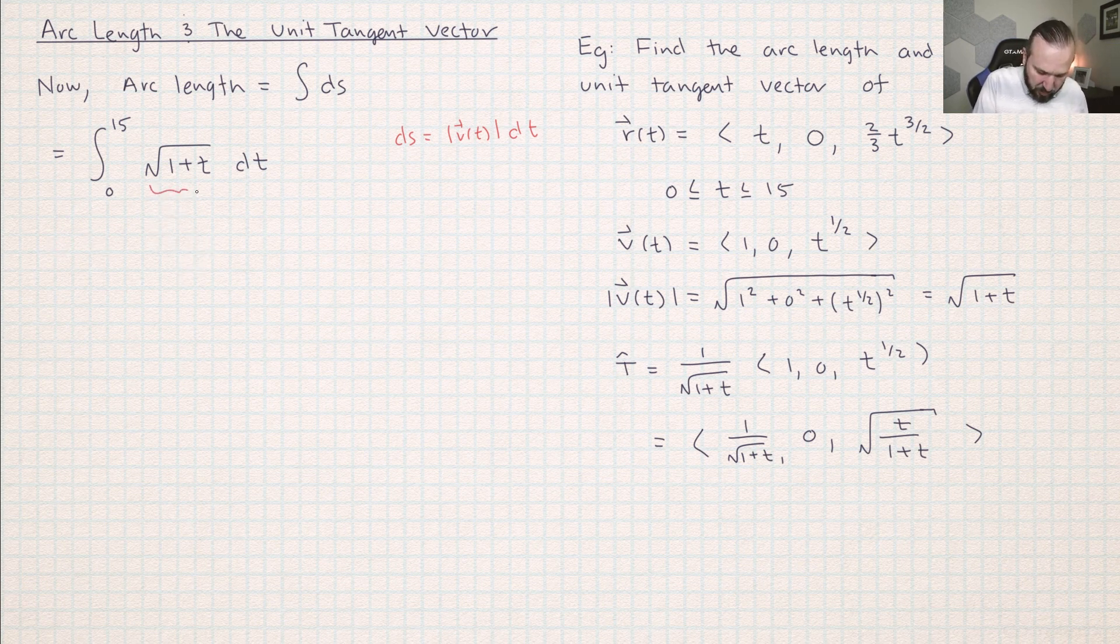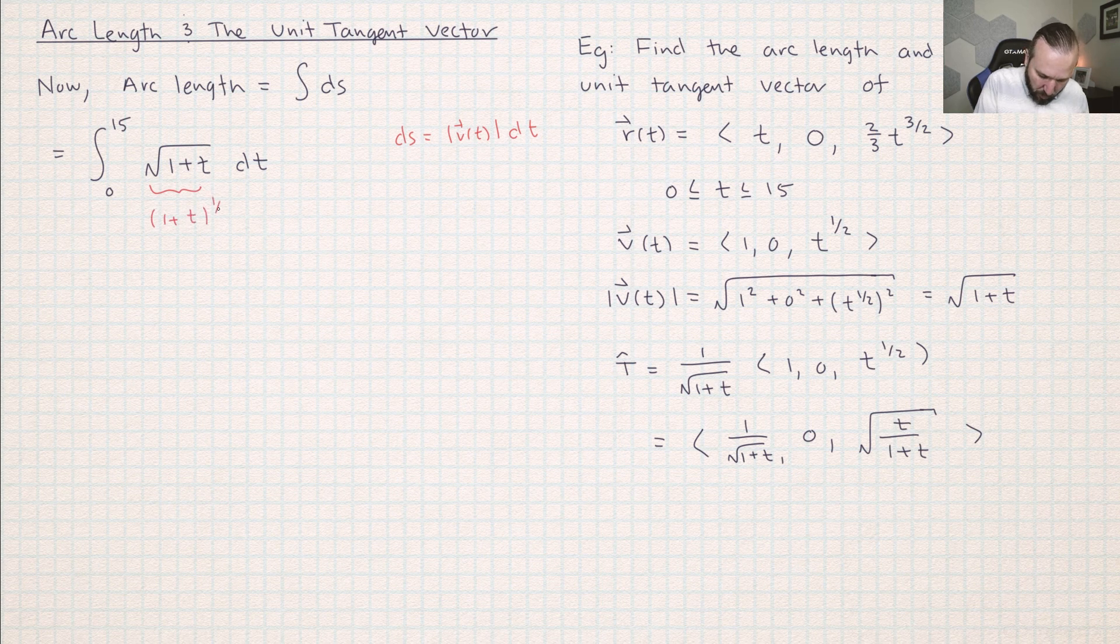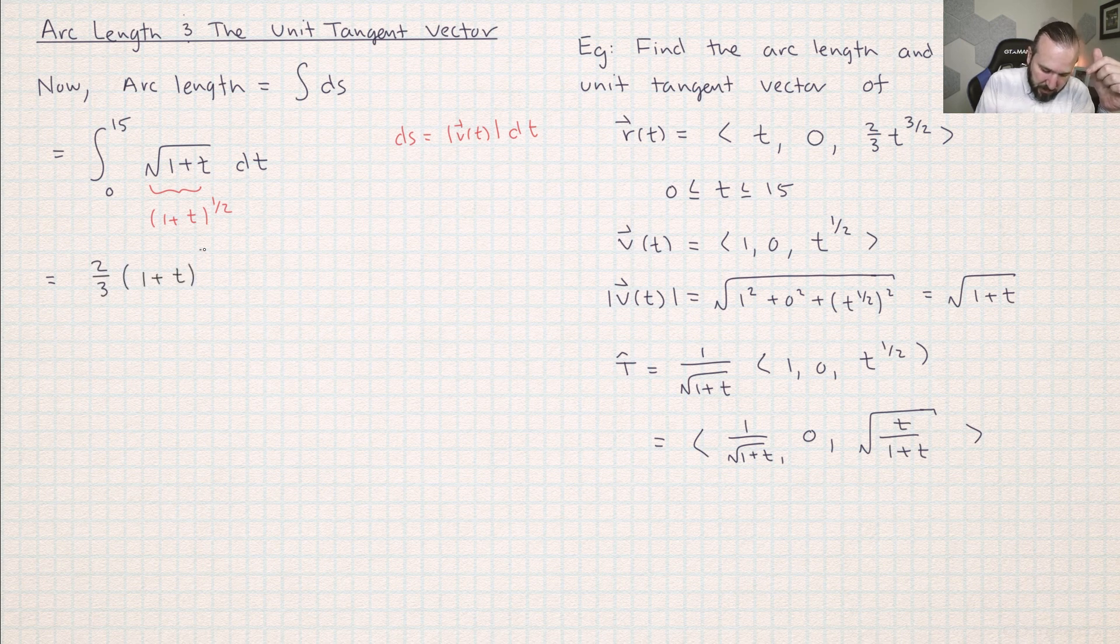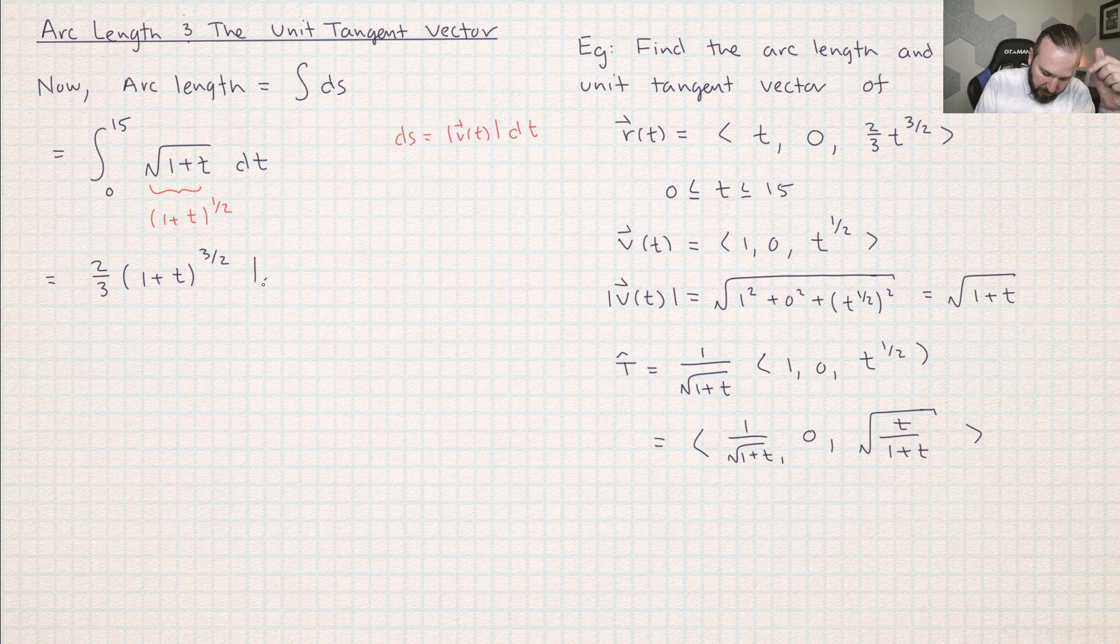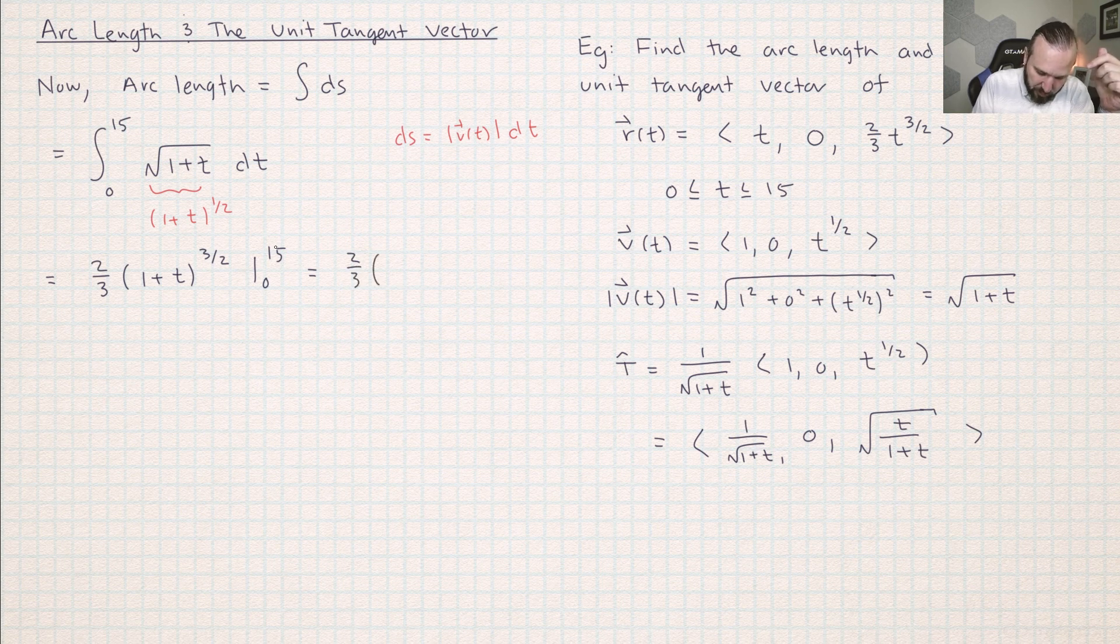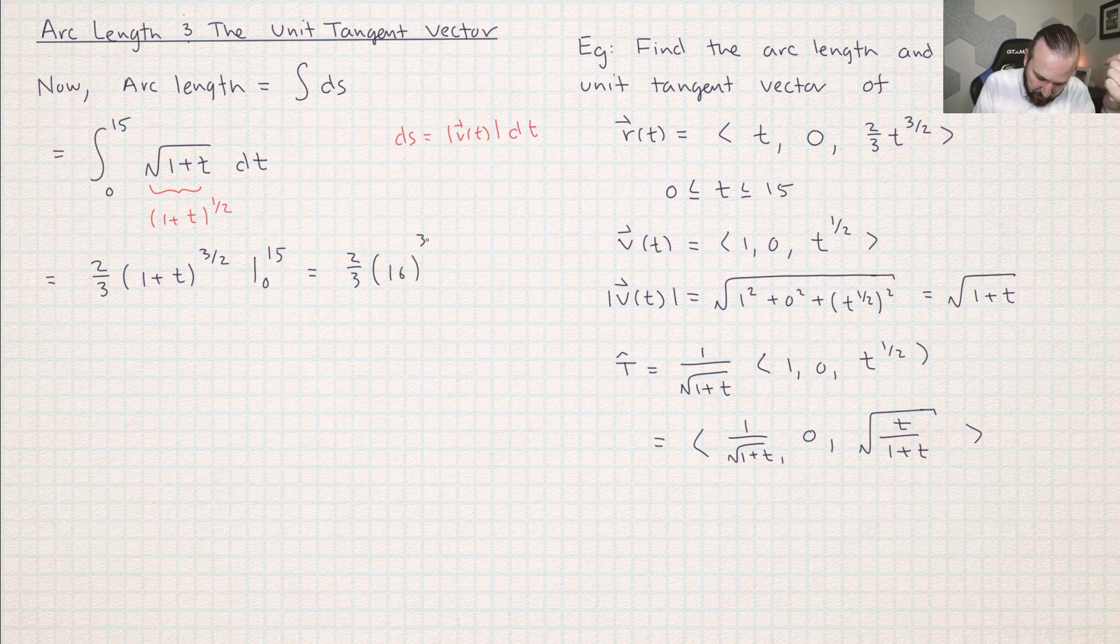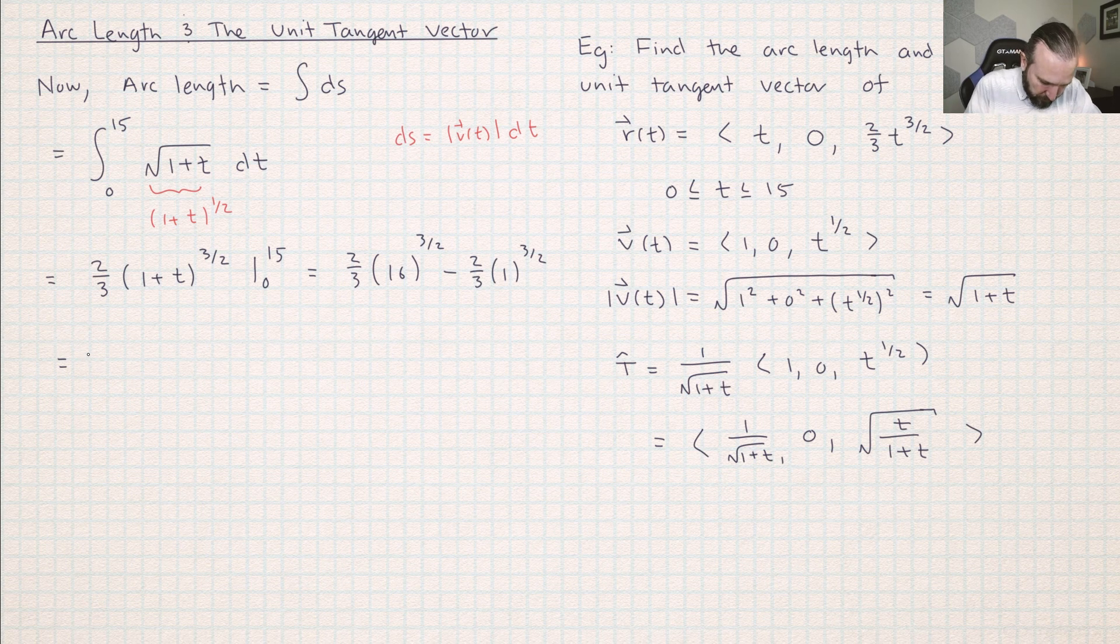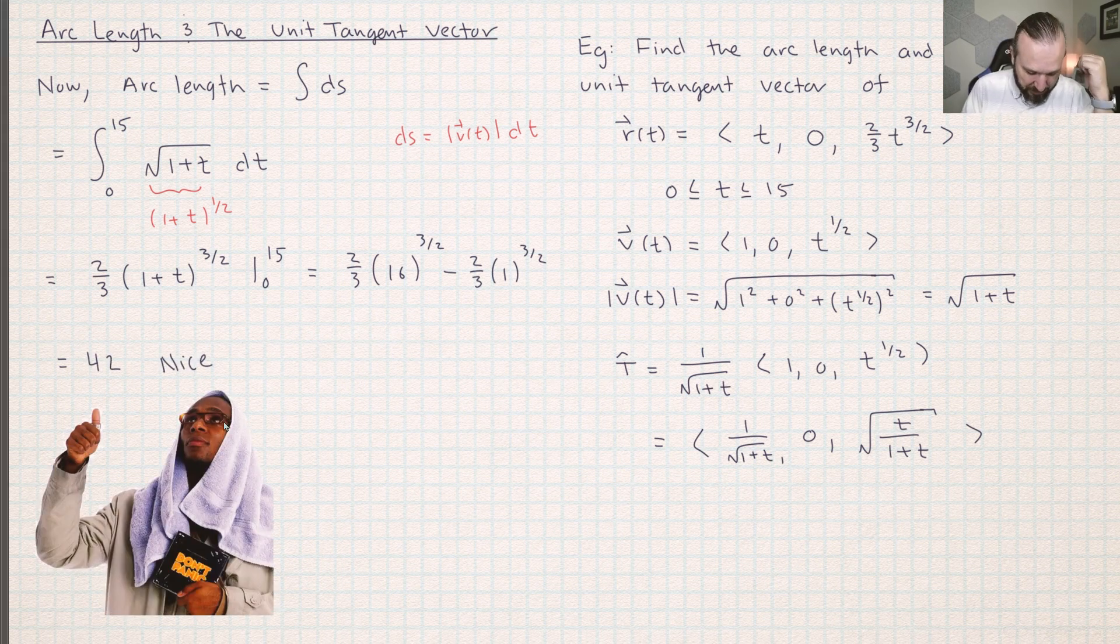So this thing right here is really 1 plus t to the 1 half power. So I'm using the power rule. Add 1, I get 3 halves. Divide by the result, you're going to get 2 thirds times 1 plus t to the 3 halves power, evaluated from 0 to 15. So this is going to be 2 thirds times, so you plug in 15 and you plug in 0. So this is going to be 16 to the 3 halves power minus 2 thirds of 1 to the 3 halves power. I got 42. Nice. Hitchhiker's Guide to the Galaxy reference.